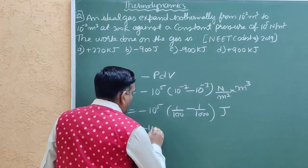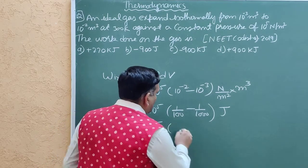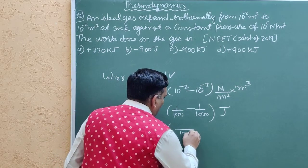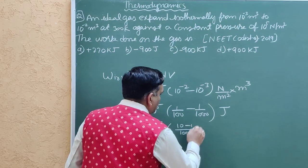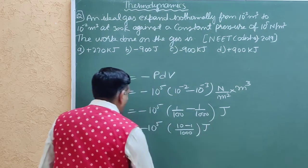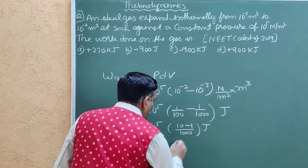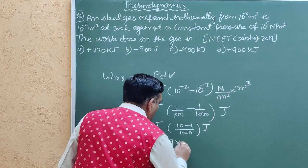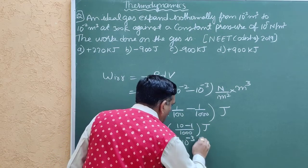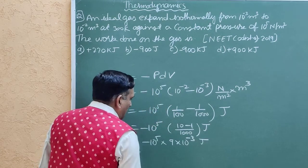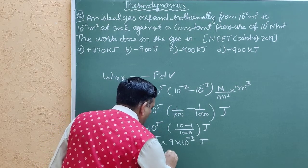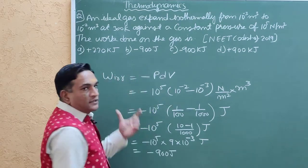Minus 10^5. 10 minus 1 Joule. Minus 10^5 into 9 into 10^-3 Joule. Now minus 900 Joule is our right answer.